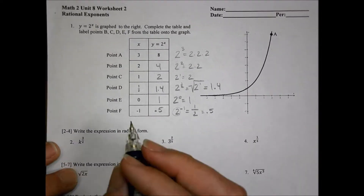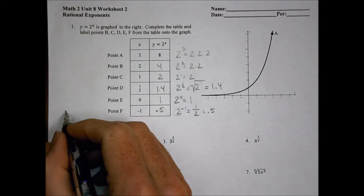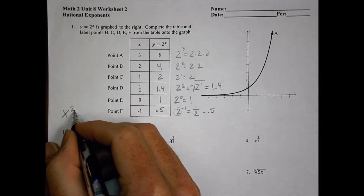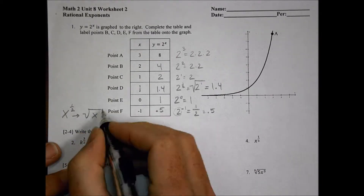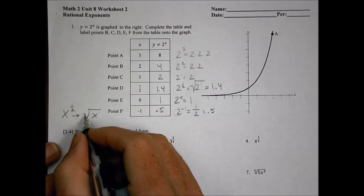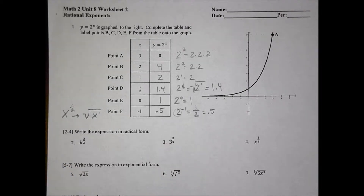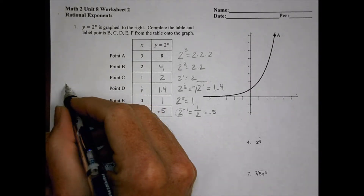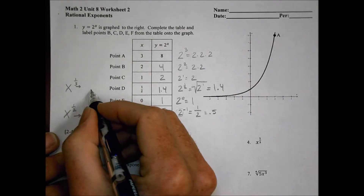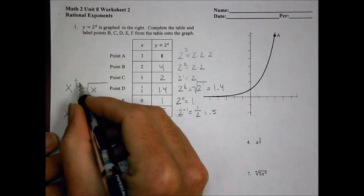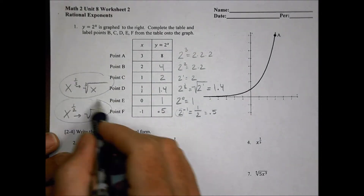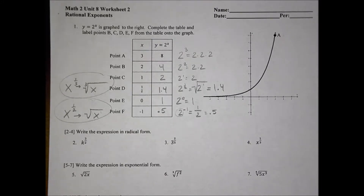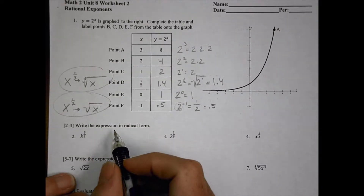Let's take a look at the homework. A key thing today: if I have a value of x to the 1 half, I can rewrite that as the square root of x. The 1 is the numerator and the 2 becomes the square root value. Similarly, if you have something to the 1 third power, x is still to the 1st, but because it's a 3rd, that becomes a cubed root. Let's look at writing the expressions in radical form — radical form means using a radical sign.